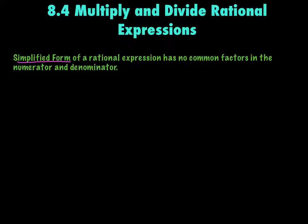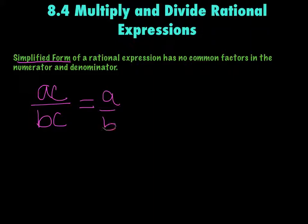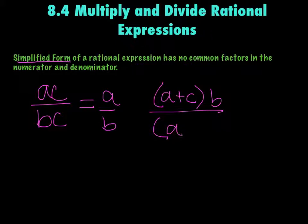So if I had a times c divided by b times c, like 2x over 5x, I could cancel out the c's. So that equals a over b. Or if I had a plus c times b over a plus c times d, I could cancel out the whole groups and have b over d.